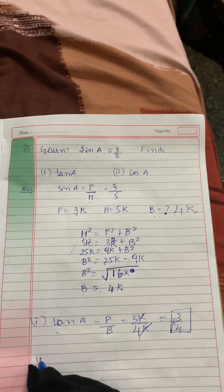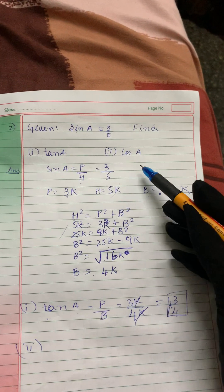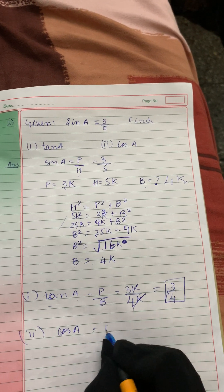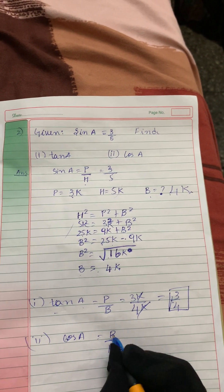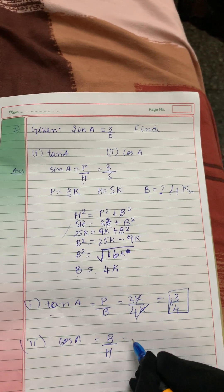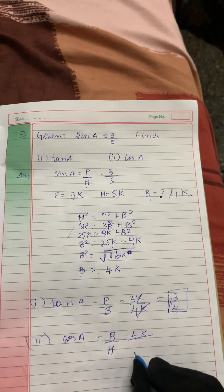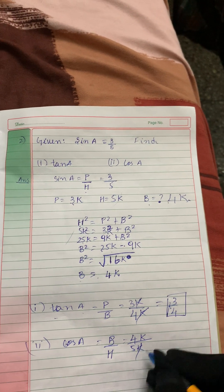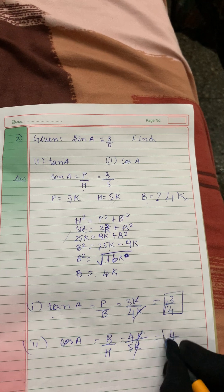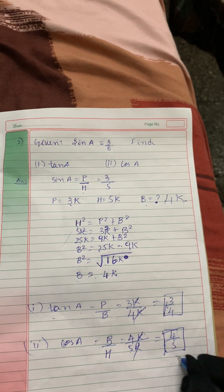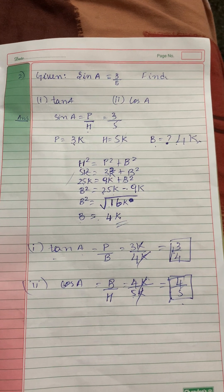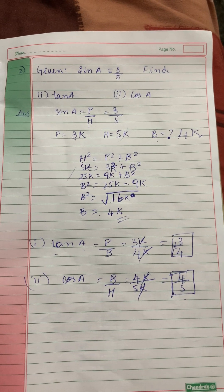Now let's solve cos A. The formula for cos A is B by H — base by hypotenuse. Base is 4K and hypotenuse is 5K. Cancelling K, cos A = 4 by 5. So these are the answers for the second question.